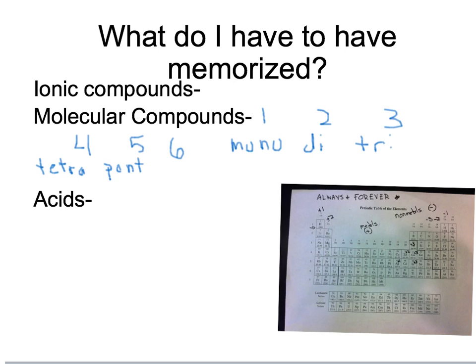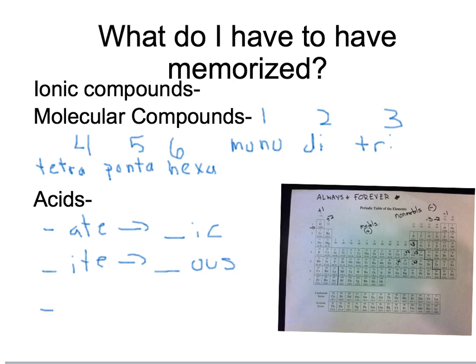Five is penta and six is hexa. For acids, you have to do the conversion: -ate becomes -ic, -ite becomes -ous, and -ide becomes hydro- ...-ic.